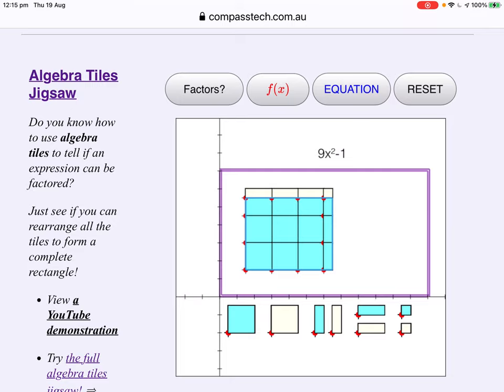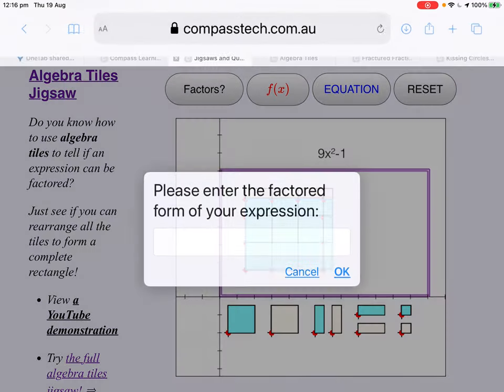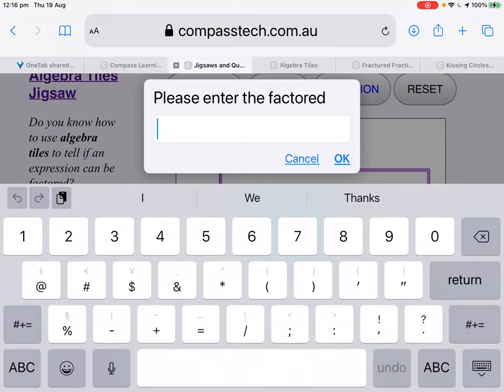All right, so what have we got? On one side, 3X plus 1. On the other side, 3X minus 1. Not surprising. Can you see how that's easily readable from the diagram?